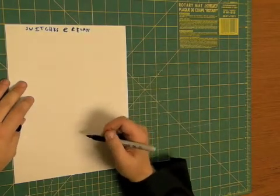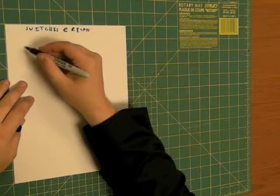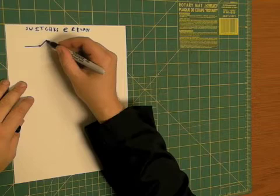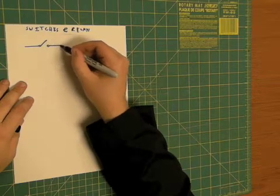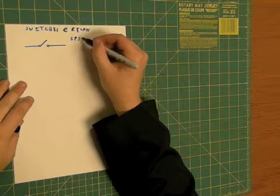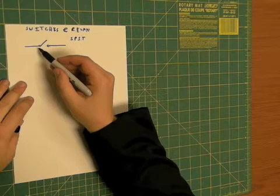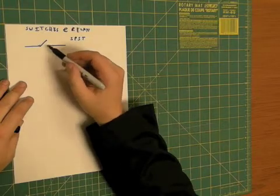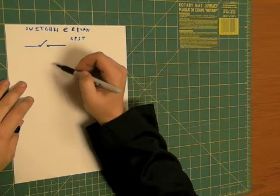There are many different types of switches. You can have simple ones that are diagrammed like this. This is what you might be familiar with. This is what's called a single-pole, single-throw. Single-pole meaning that there's just one line coming in here. Single-throw means that there's only one connection to be made.